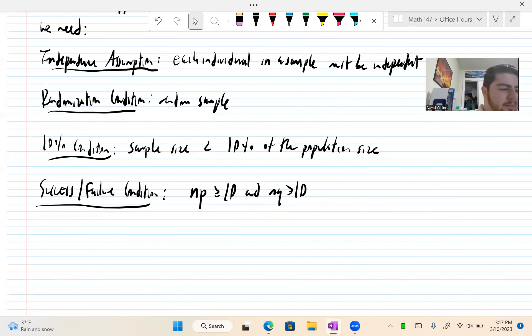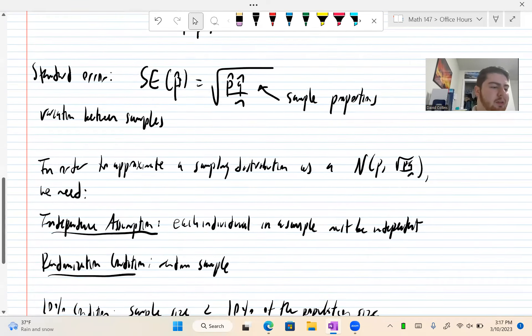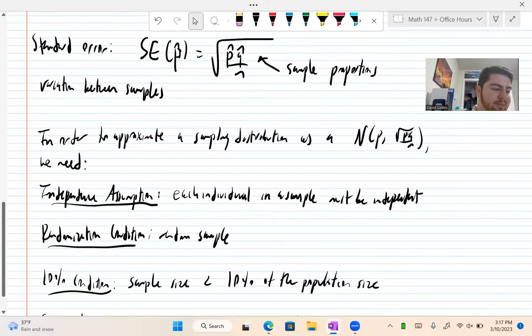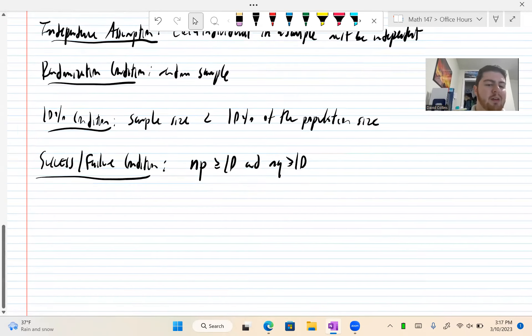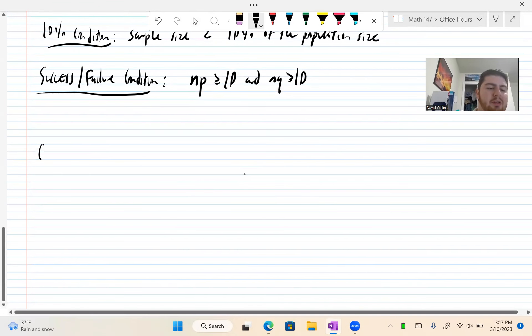We'll see very similar conditions basically every class now for the rest of the course. So from here, we're starting to build up the idea of a confidence interval. The standard error, which I mentioned above, is the first step.